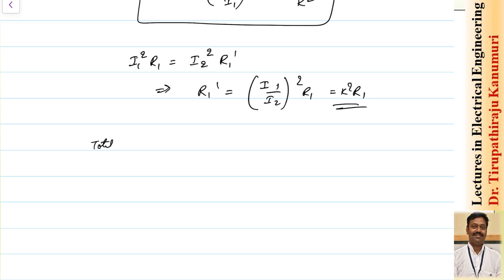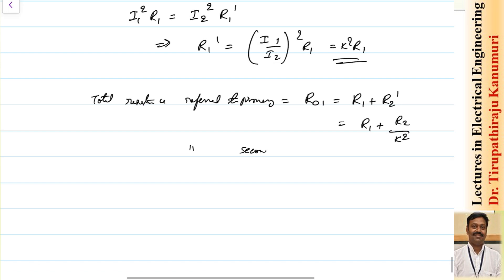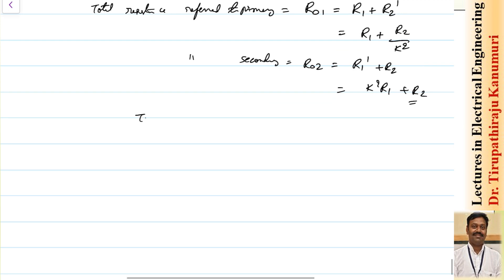The total resistance referred to the primary side is represented as R01. This will be equal to R1 plus R2 referred to the primary side, which is R2': R01 = R1 + R2/k². Similarly, R02 = k²R1 + R2 is the total resistance referred to the secondary side. Total copper losses can be calculated as I1²R01, which equals I2²R02.